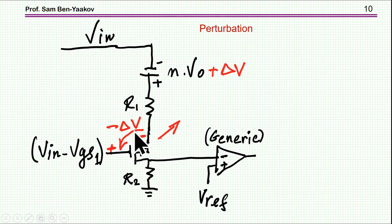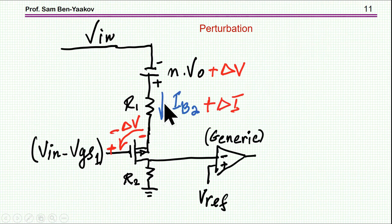This will cause an increase in the voltage here, and this will increase the VGS. Remember this is VGS. If VGS is becoming larger, then IB2 is becoming larger.